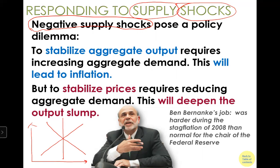If we have a negative supply shock, the supply curve shifts to the left. With a negative supply shock, we enter stagflation — you have a recessionary gap, meaning you produce less than you potentially can, and you have inflation in the sense that the price increases.